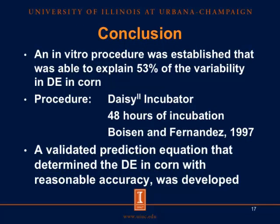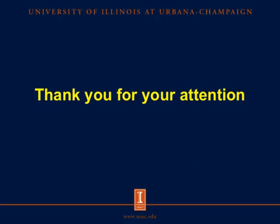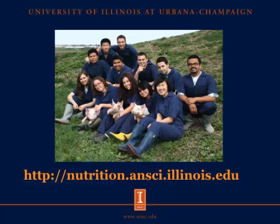In conclusion, an in vitro procedure was established that was able to explain 53% of the variability in DE in corn, requiring a 48-hour incubation period and using the Boyset and Fernandez procedure published in 1997. In this experiment, a validated prediction equation that determines DE in corn with reasonable accuracy was developed. Thank you for your attention. If you are interested in more nutrition facts, please visit our website at the address on your screen.